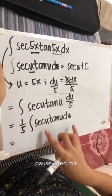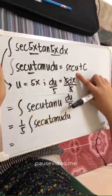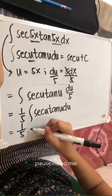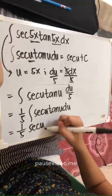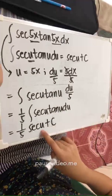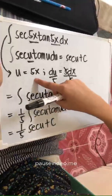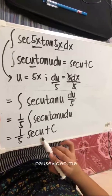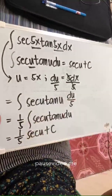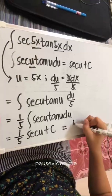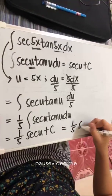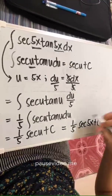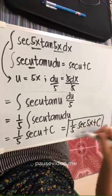Since the integral of sec u tan u du equals sec u plus c, we have one-fifth sec u plus c. Replacing u with its original value of 5x, we get one-fifth sec(5x) plus c. This is our final answer.